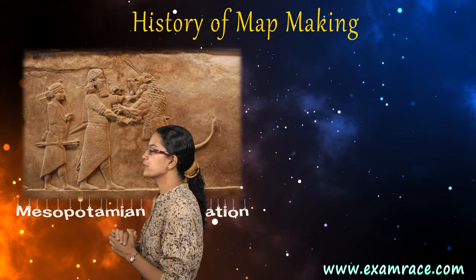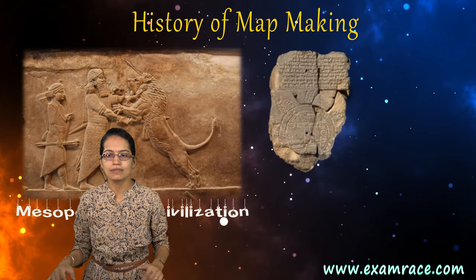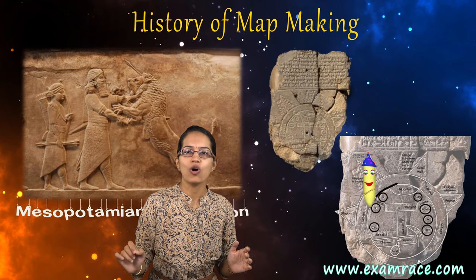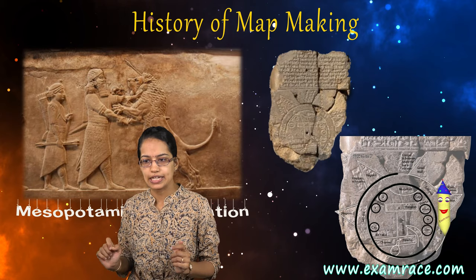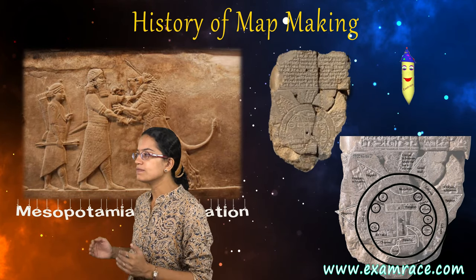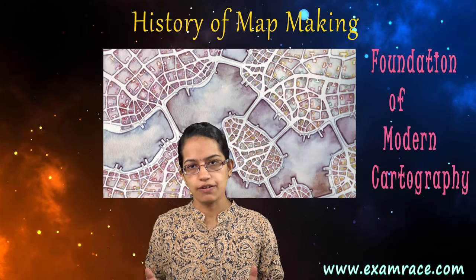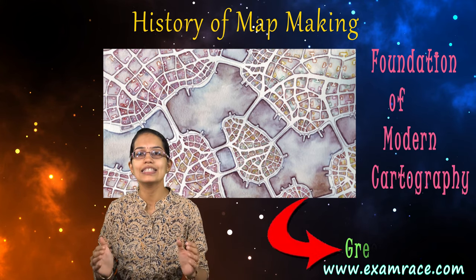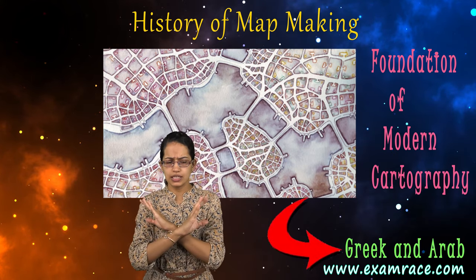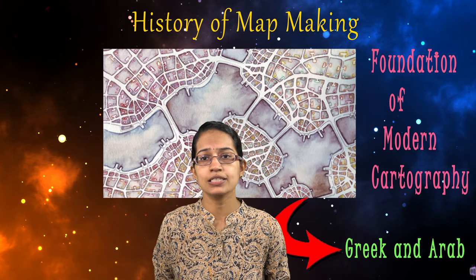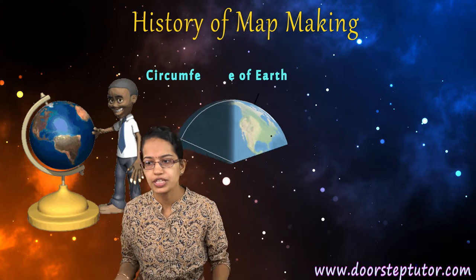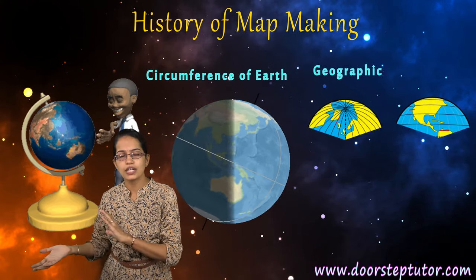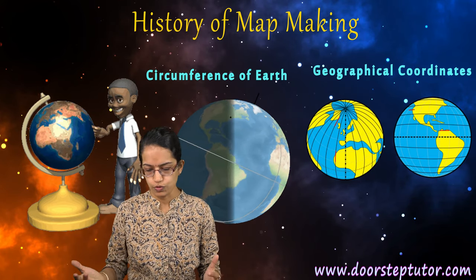The next is the history of map making. It all started during the Mesopotamian civilization where maps were drawn on clay tablets using a kind of stick engraved onto them. Later, the foundations of modern cartography were laid down by Greeks and Arabs, who were considered exemplars in cartographic techniques. They researched the circumference of the earth, geographical coordinates for map making, and so on.